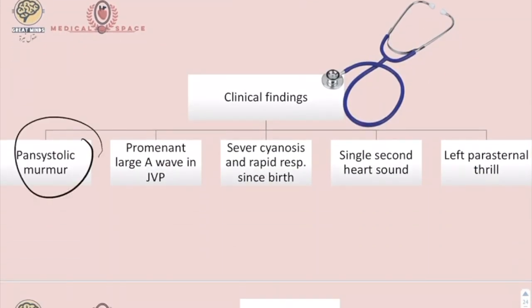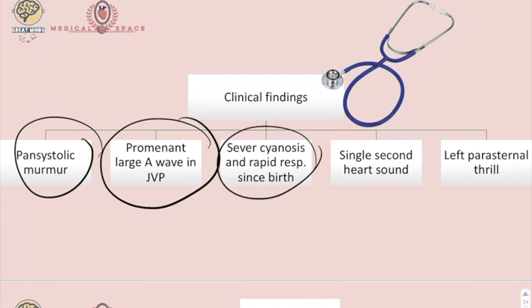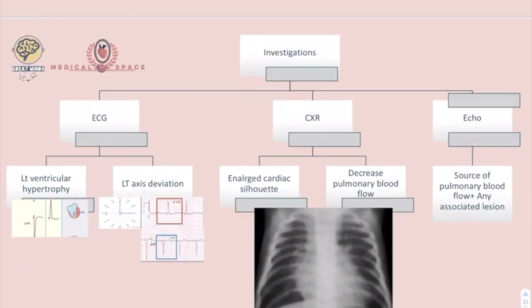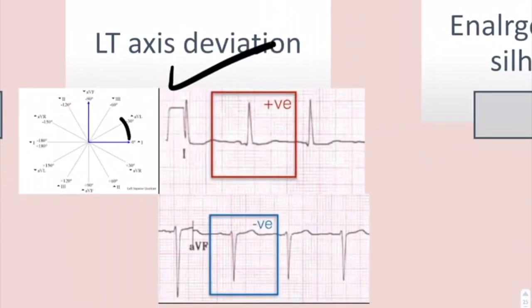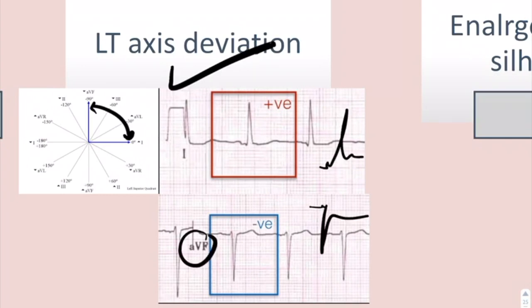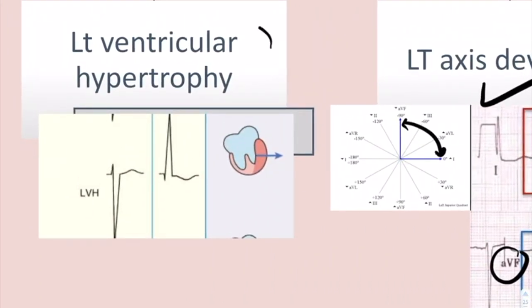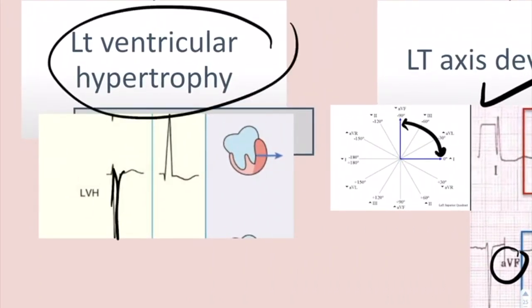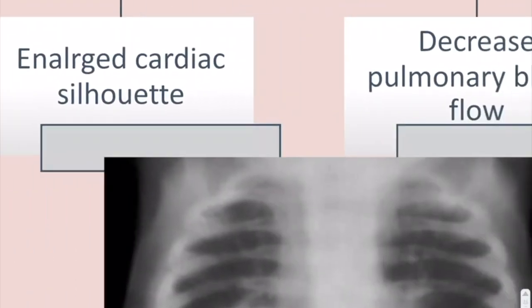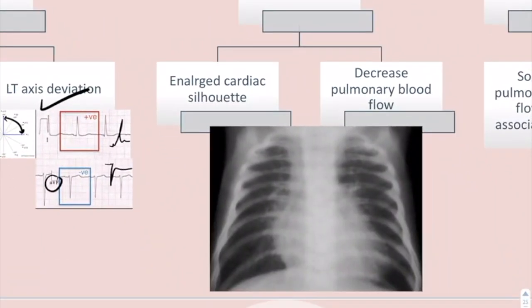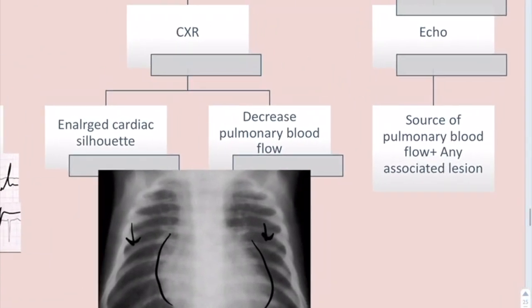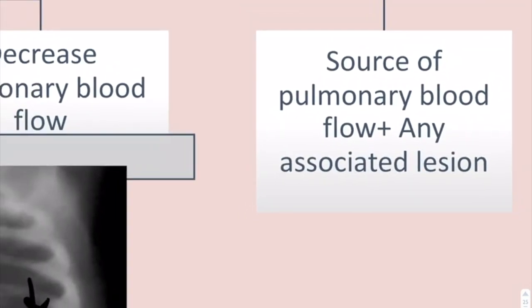The patient presents with pansystolic murmur, a prominent large A wave in the jugular venous pulse, severe cyanosis, rapid respiration from birth, a single second heart sound, and a left parasternal heave with left axis deviation between 0 and minus 90 degrees. On ECG, lead I shows positive deflection and AVF shows negative deflection of QRS. For left ventricular hypertrophy, V1 shows a deep S wave and V6 shows a tall R wave. Chest X-ray shows enlarged cardiac silhouette and decreased pulmonary blood flow. Echo shows the source of pulmonary blood flow and any associated lesions.